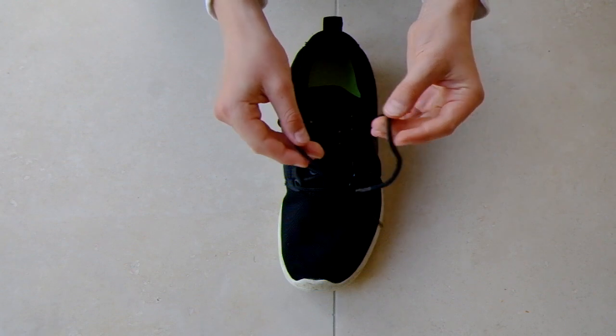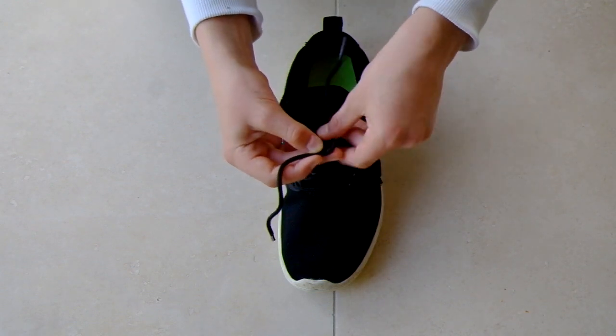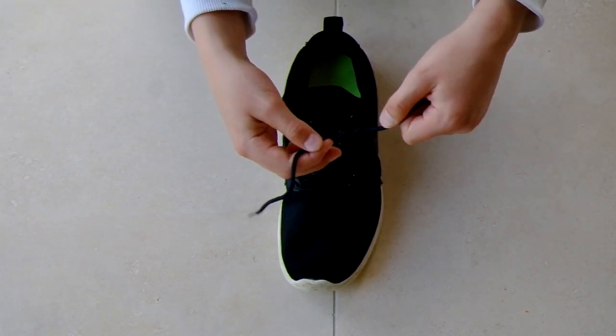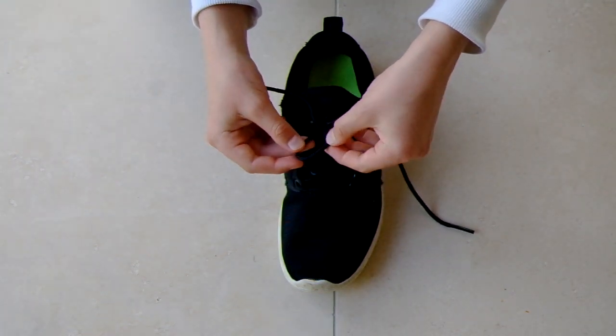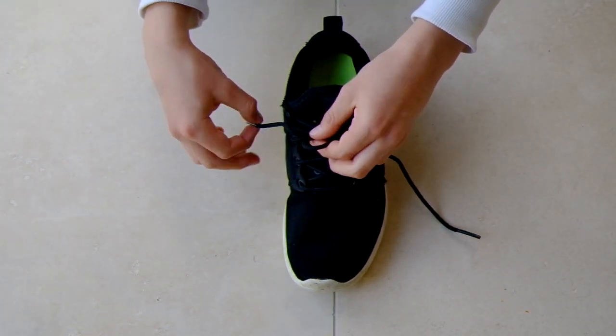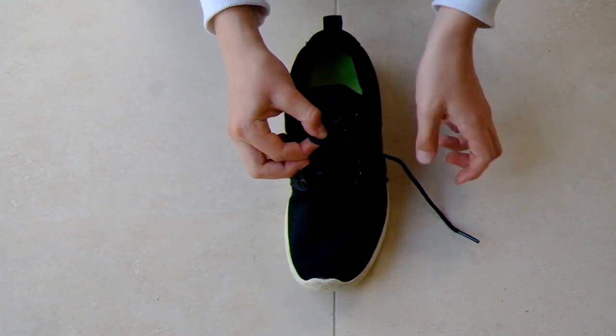This is where you get these two crossing and you put one of the laces underneath. Then, three quarters of the way down, so you have about three quarters dangling. It doesn't have to be perfect.